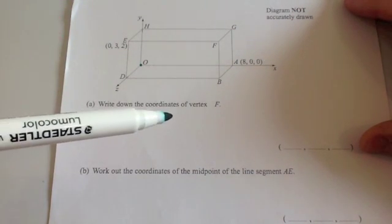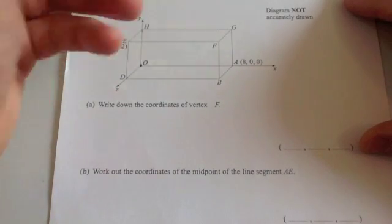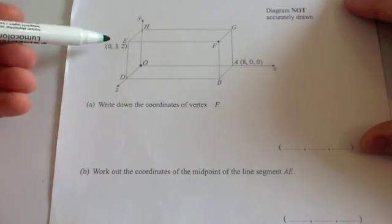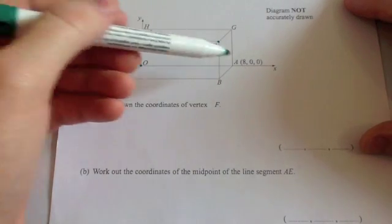And you've got obviously your cuboid. The first question says write down the coordinates of the vertex F. So here's the vertex F. And we have to write down what this coordinate would be. It's given us two coordinates. So let's just have a look at these two coordinates first.